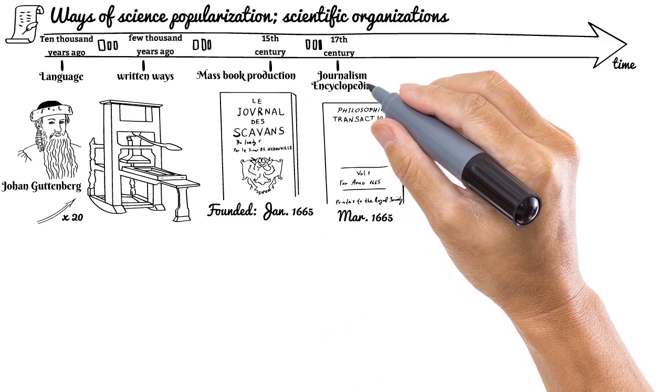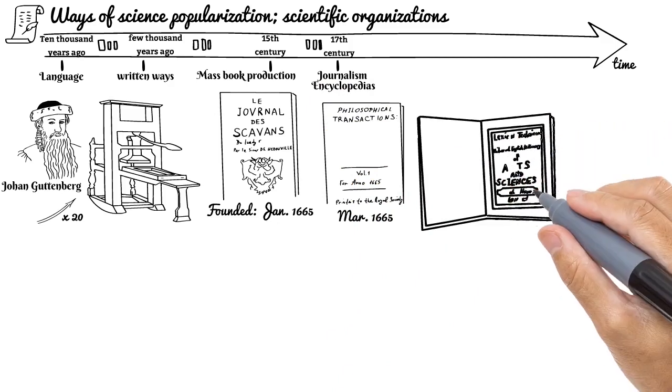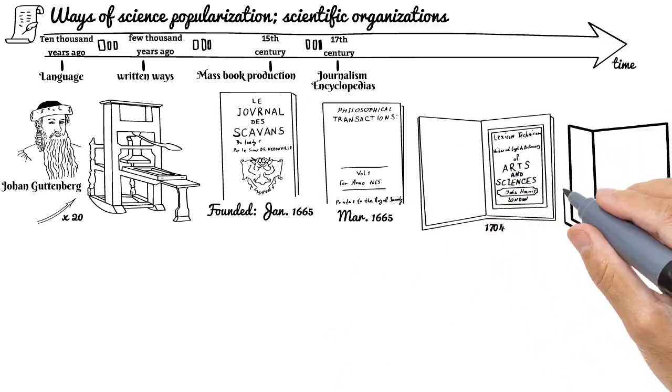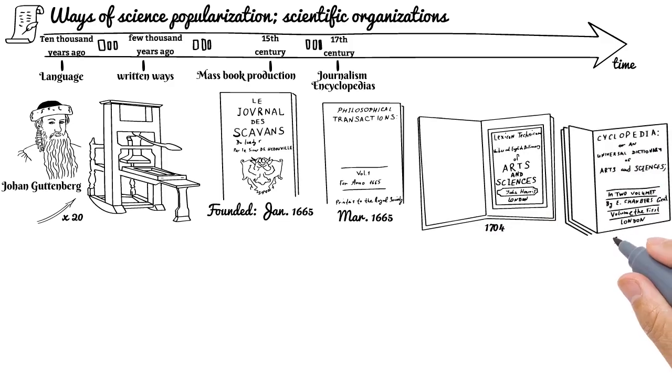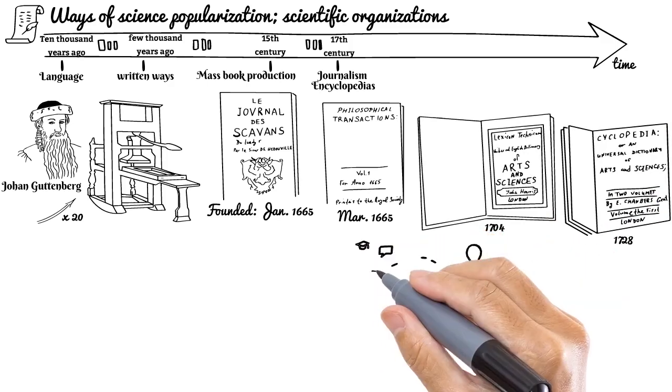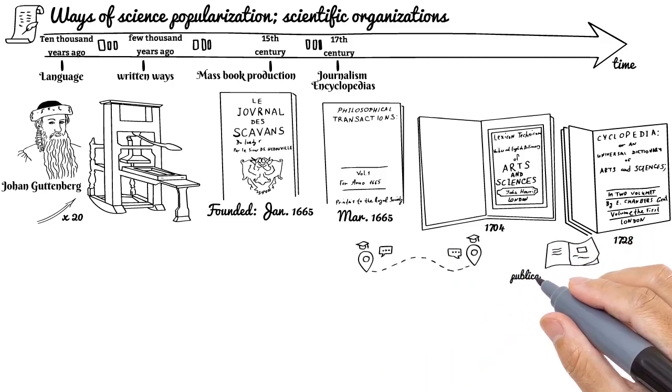Journalism began in the 17th century. It improved communication and played a great role for science popularization. There were Journal des Savants founded in January 1665 in France and the Philosophical Transactions of the Royal Society founded in England three months later. Not to mention the first true encyclopedias: John Harris's Lexicon Technicum in 1704 and Ephraim Chambers' Encyclopedia in 1728. Journalism brought new ways of communication in the scientific world.